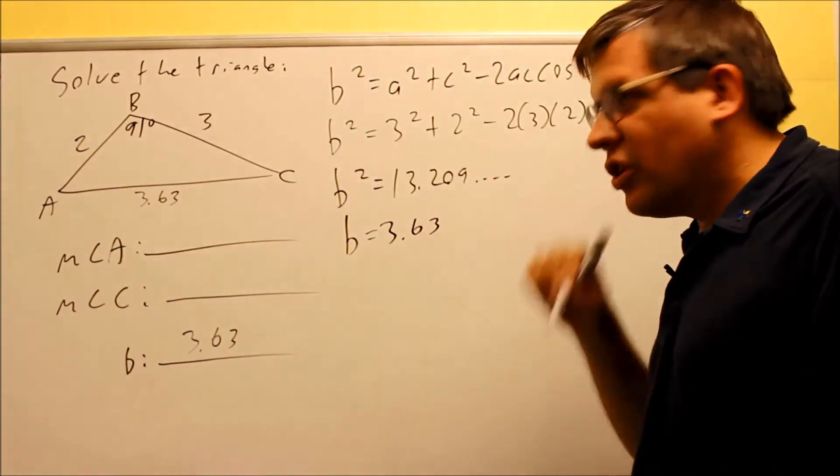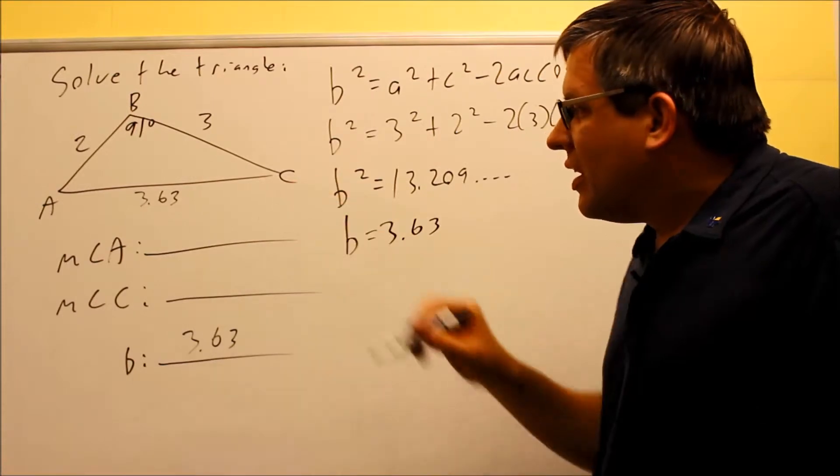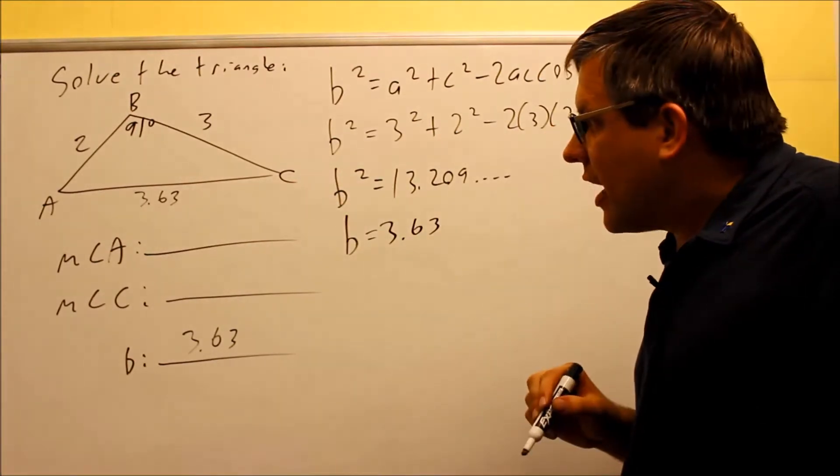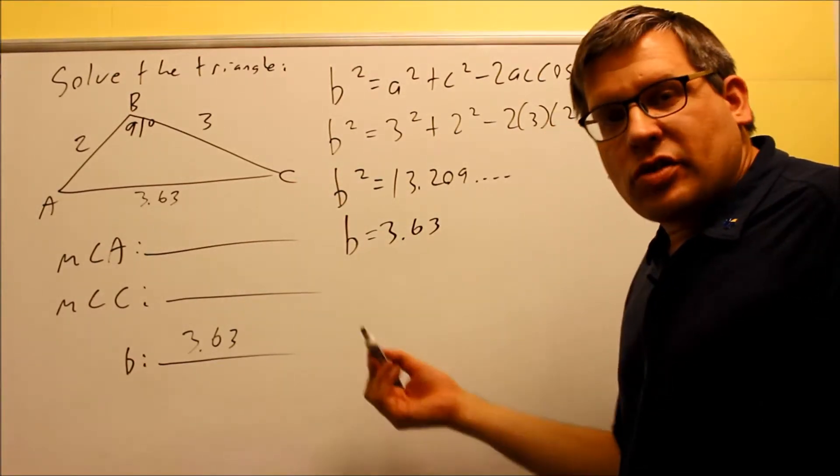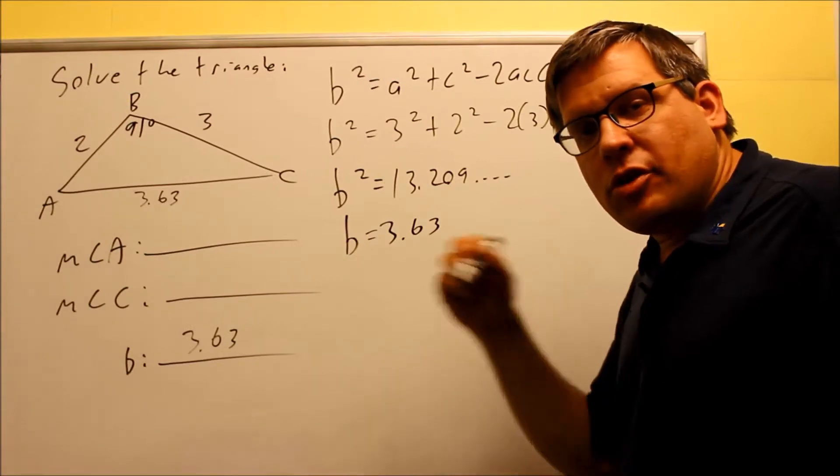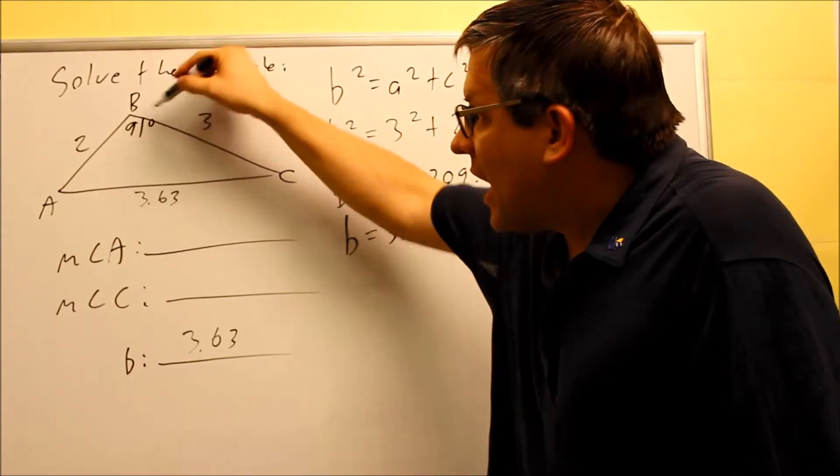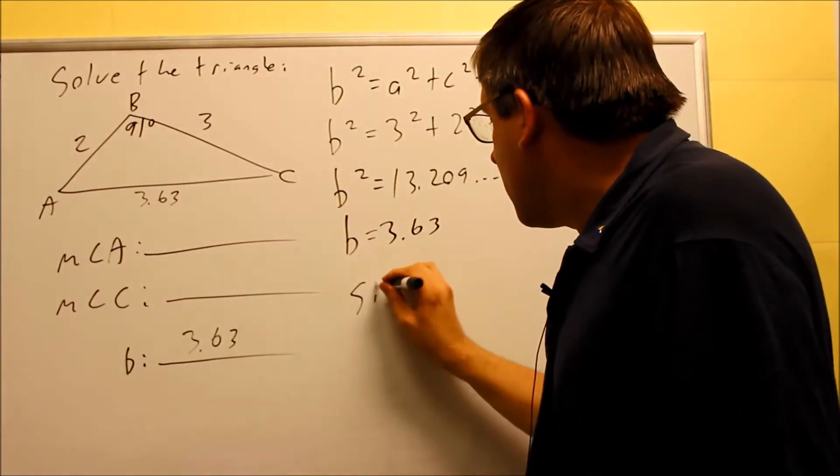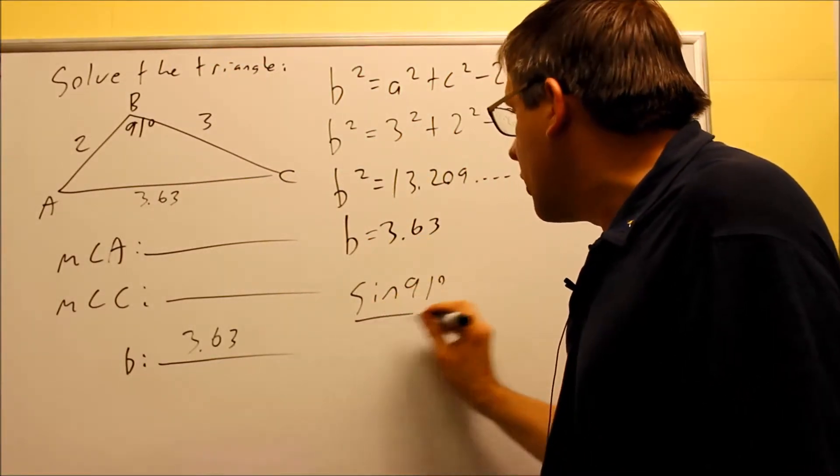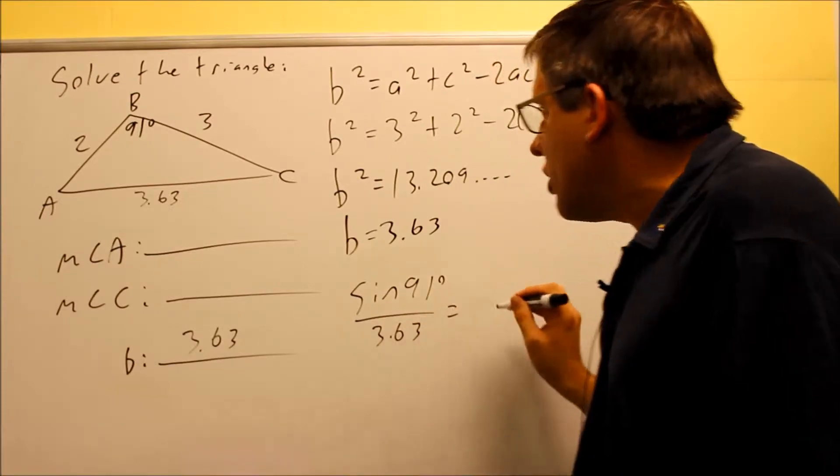And so the next thing is I want to solve for angle A or angle C. So I can use either Law of Sines or Law of Cosines with that. I'm going to use Law of Sines. So I can do that because I have a side opposite a given angle. So I'm going to do sin(91°) / 3.63 will equal, I'm solving for A. If I want to go for A, that means I have to use 3 down here.